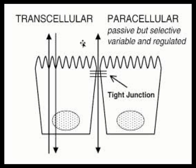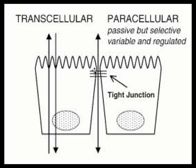In many cases, nature wishes to prevent paracellular passage — such as in the bladder, where urine stored inside must not pass back into bodily tissues and the blood supply. Tight junctions are utilized to bring the plasma membranes of neighboring cells extremely close together and, using suitable proteins, seal this gap.